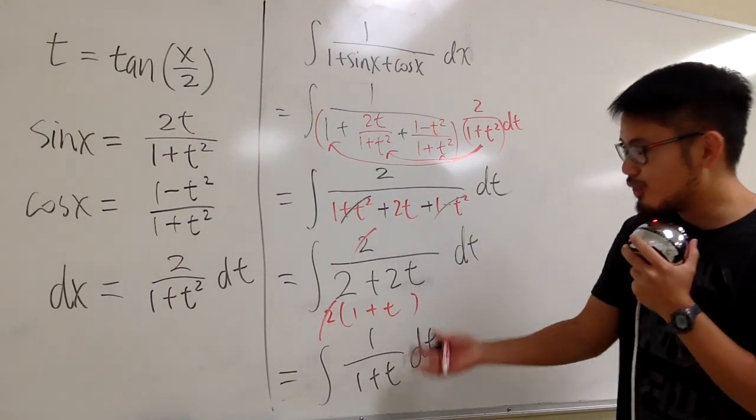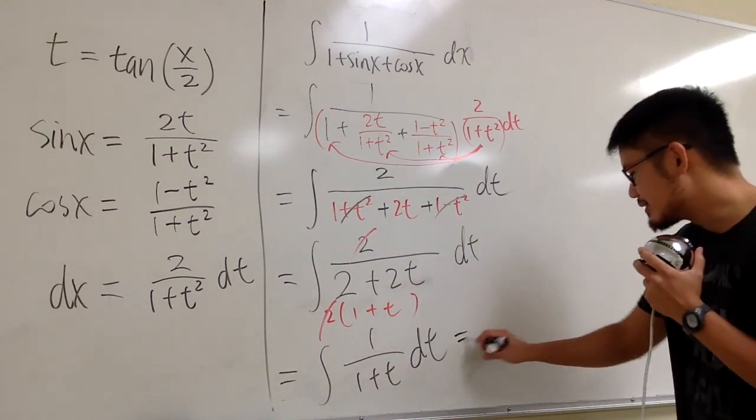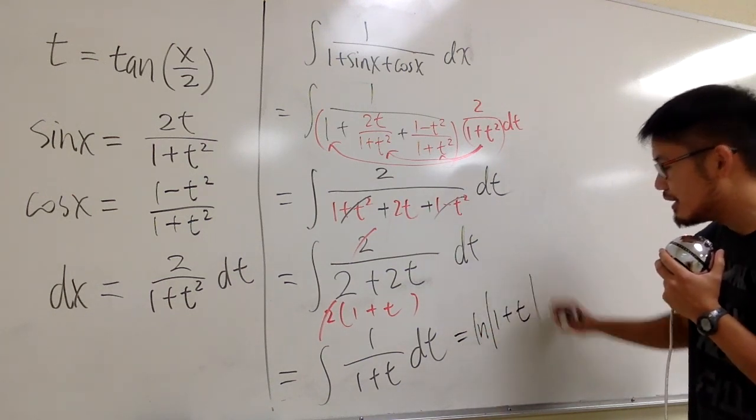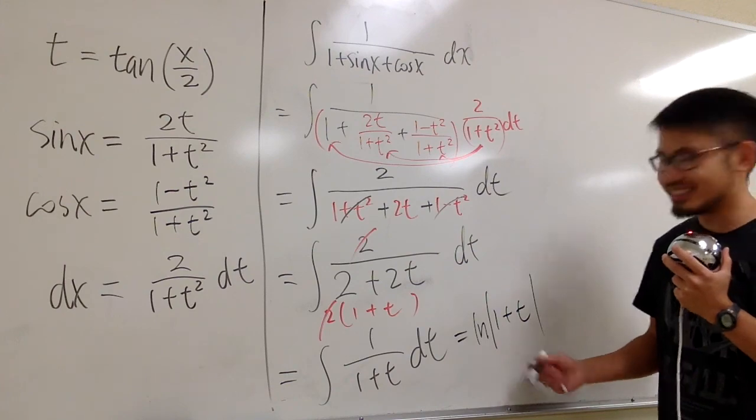And how can we integrate 1 over 1 plus t? Well, this is going to be ln absolute value of 1 plus t, and we are done with the integration part.